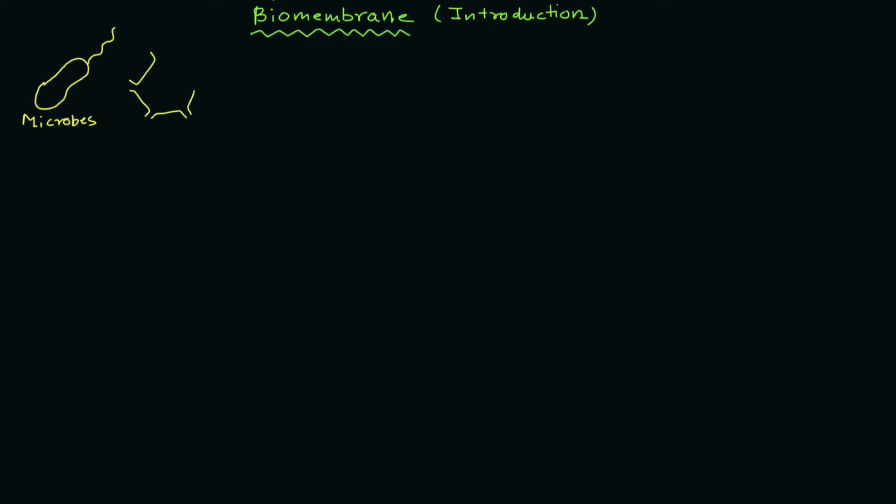Microbes, plants, and animals - everything has a specific biomembrane or plasma membrane. This is important for their functioning. It contains many protein molecules, and those protein molecules have specific functions.